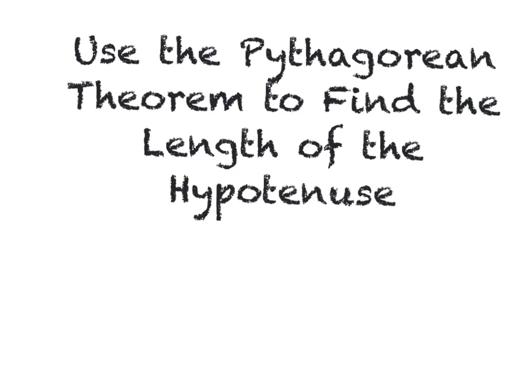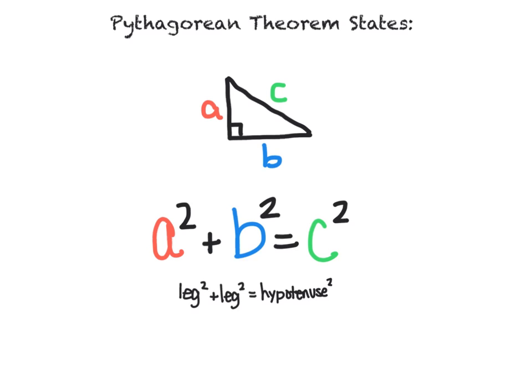In this video, you will use the Pythagorean Theorem to find the length of the hypotenuse in a right triangle. Make sure you have a calculator ready and your video note sheet. As you recall, the Pythagorean Theorem states that the leg squared plus the leg squared equals the hypotenuse squared, or as we often say, a squared plus b squared equals c squared.